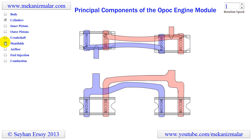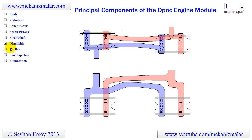The inlet manifolds, which feed turbocharged air into the cylinder inlet ports, are shown in blue, while the exhaust manifolds are shown in red. The direction of gas flow is shown with arrows using the same color code.